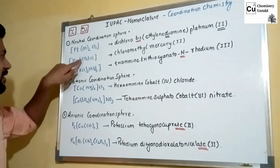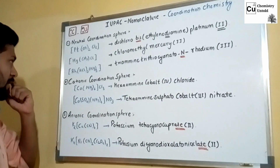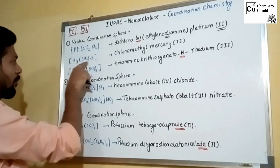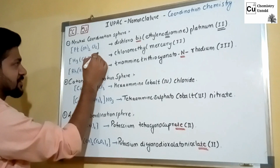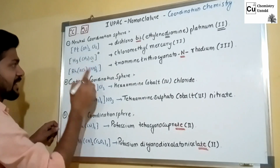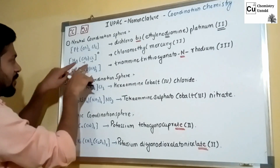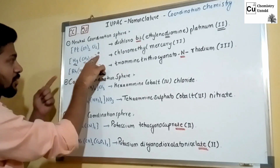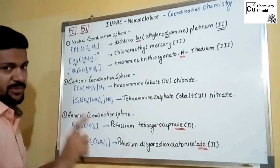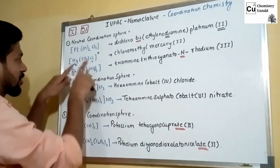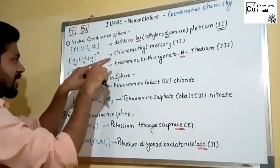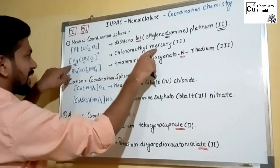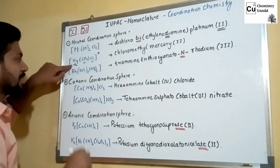The next example is Hg coordinated with CH₃ once and chloride once. Since the complex is neutral, chloride (minus 1) and methyl (minus 1) give a total of minus 2, so mercury must be plus 2. When writing the name, list ligands alphabetically: C comes before M, so chloro comes before methyl. The name is chloro(methyl)mercury(II).